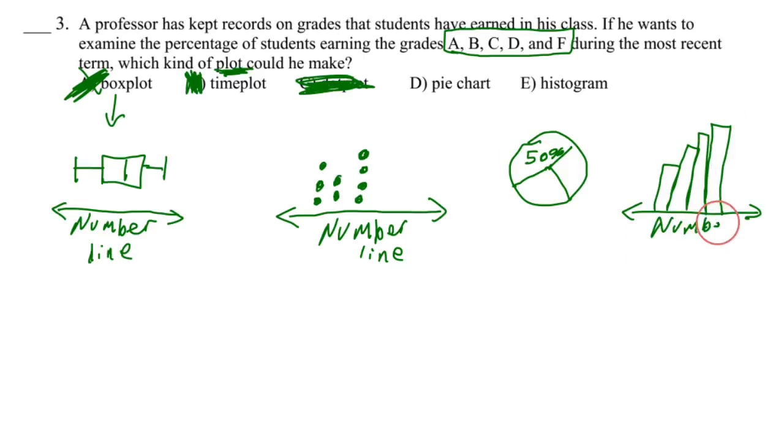Again, this is a number line right here, and our data that we were asked to keep track of is not numbers, so E, not an option, so that means our correct answer is D.